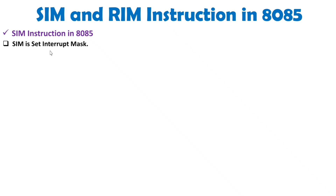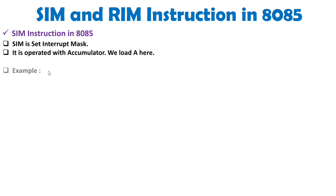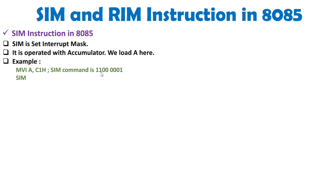SIM means Set Interrupt Mask. We use the SIM instruction to set the interrupt mask, and it operates along with the accumulator. You will first need to load a value into the accumulator, which acts as the command. After that, you write the SIM instruction. For example, if you write MVI A, C1 hex, then C1 is loaded into the accumulator, which becomes the command for SIM. After that, you execute the SIM instruction.